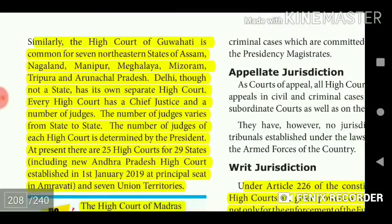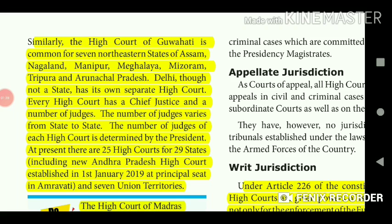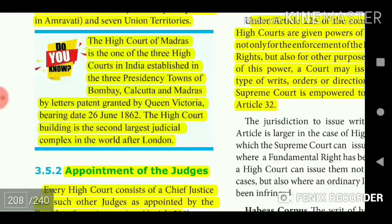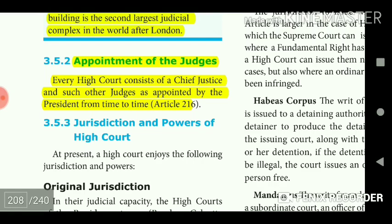Similarly, the High Court of Guwahati is common for several North-Eastern states: Assam, Nagaland, Manipur, Meghalaya, Mizoram, Tripura, and Arunachal Pradesh. Delhi, though not a state, has its own separate High Court. Every High Court has a Chief Justice and a number of judges, which varies from state to state and is determined by the President. At present, there are 25 High Courts for 29 states, including the new Andhra Pradesh High Court established on 1 January 2019 at its principal seat in Amaravati, and 7 Union Territories. The High Court of Madras is one of the three original High Courts established by Letters Patent granted by Queen Victoria on 26 June 1862. The High Court building is the second largest judicial complex in the world after London.